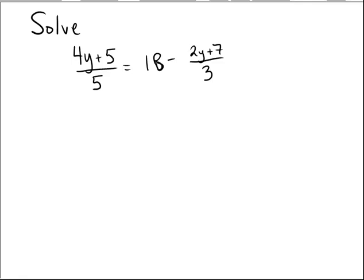Let's try to solve the following linear equation: 4y plus 5 over 5 equals 18 minus 2y plus 7 over 3.